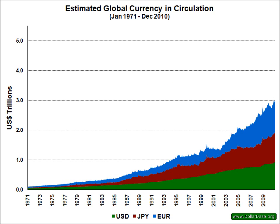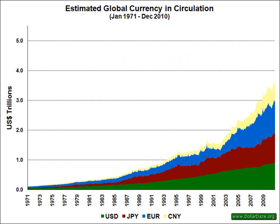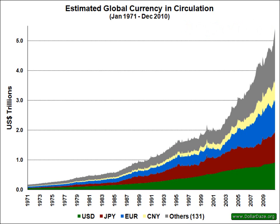These three currencies represent nearly 60% of the value of all physical paper currency within the public domain. The fourth most significant paper currency is the Chinese renminbi, also known as the Chinese yuan. The remaining 131 currencies shown in this chart are represented in gray. Together, these 135 currencies amount to 5.2 trillion U.S. dollars. At the end of August 1971, when the U.S. dollar was taken off the last vestiges of the gold standard, the total amount of currency was equivalent to 171 billion U.S. dollars. This means that over the last 40 years, the nominal valuation of all paper money has increased by more than 30 times.